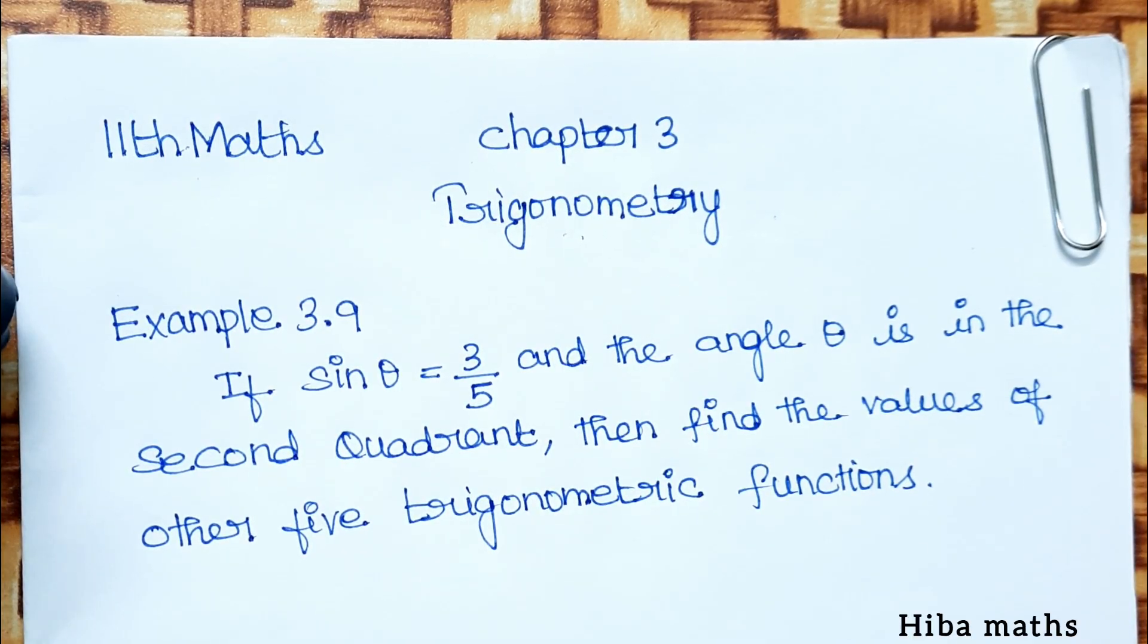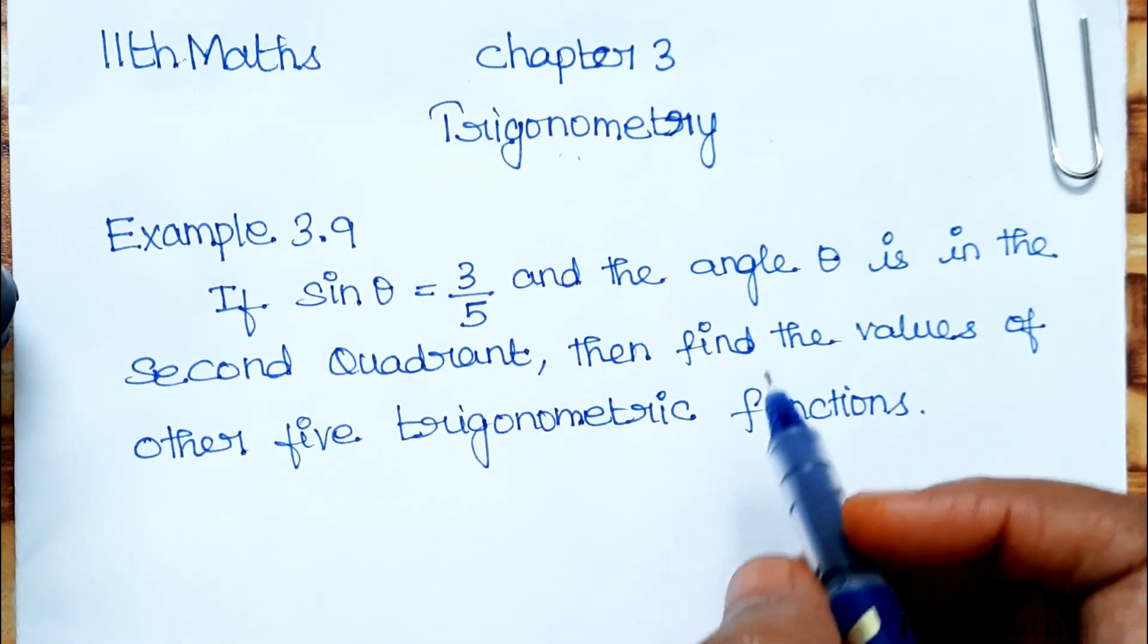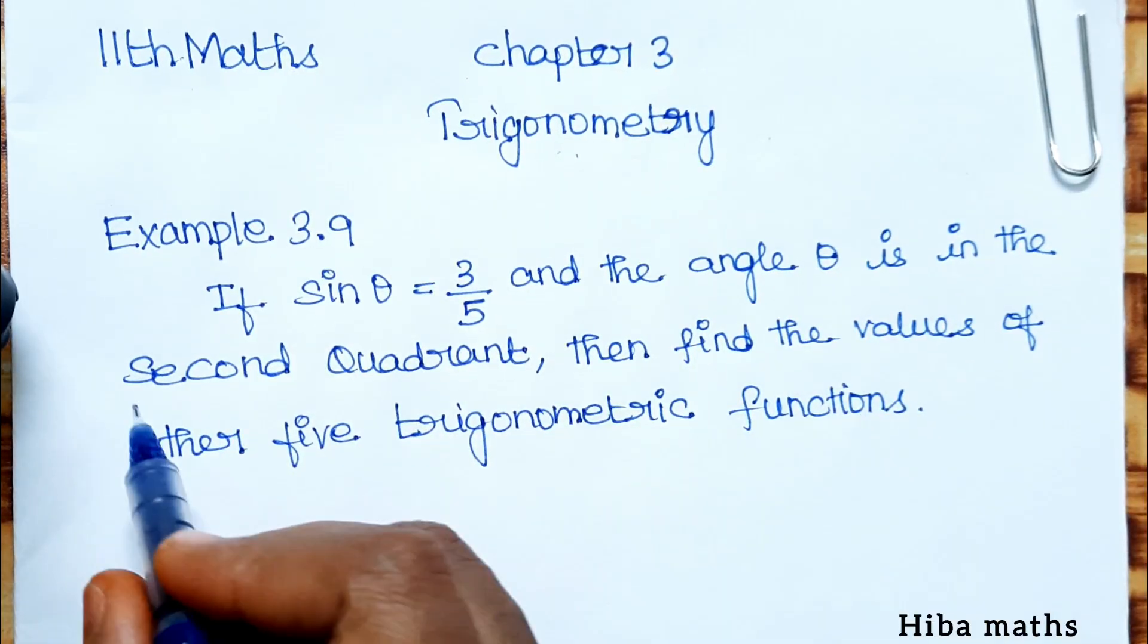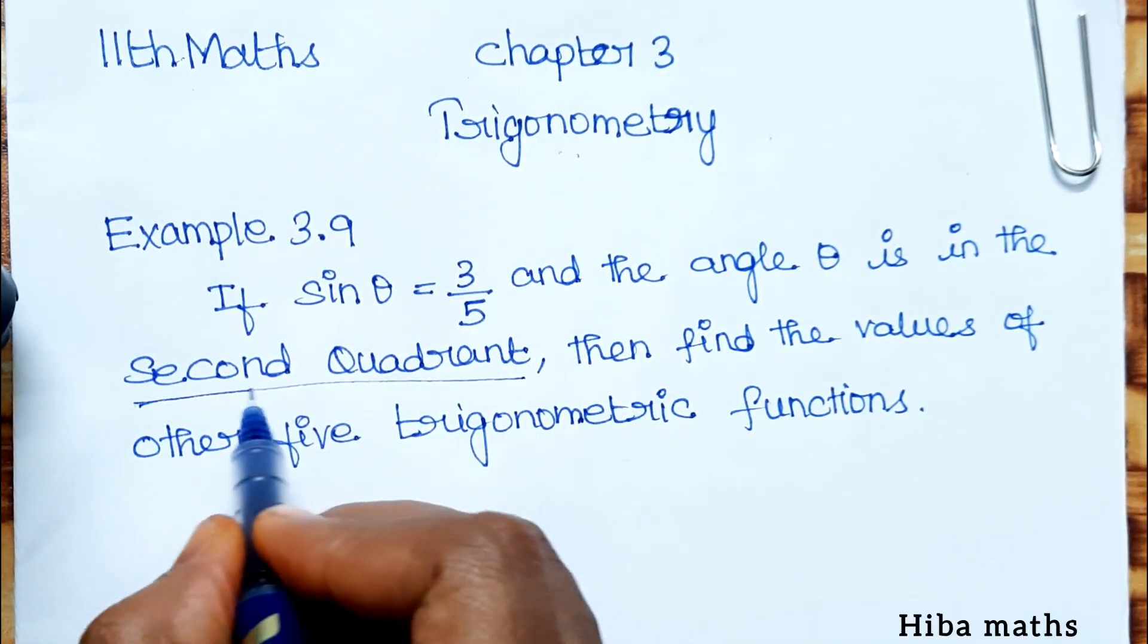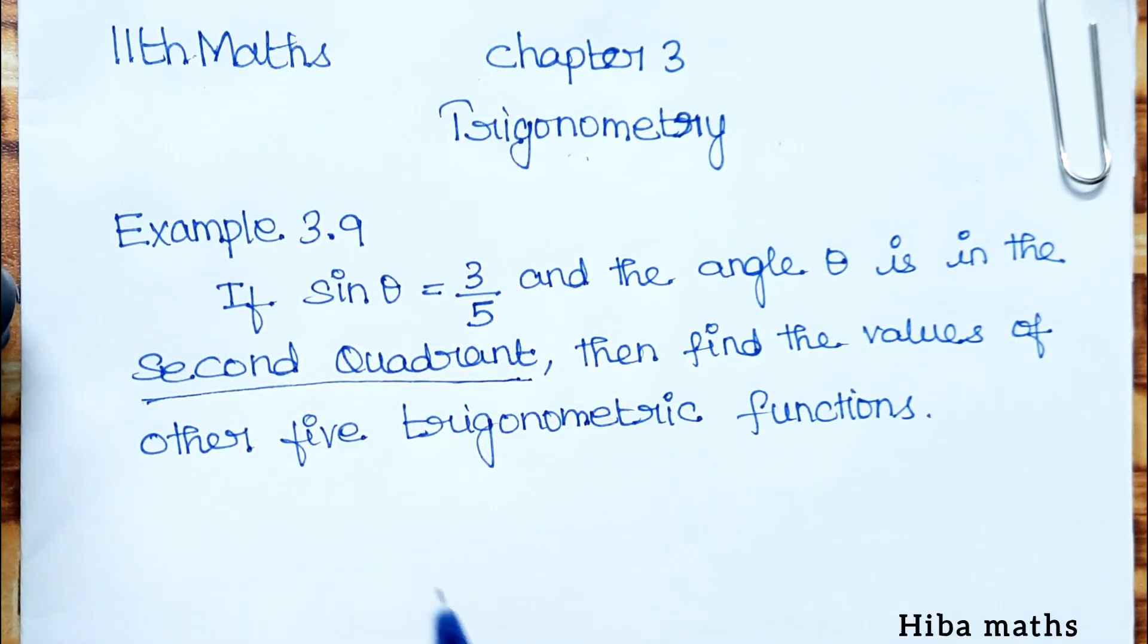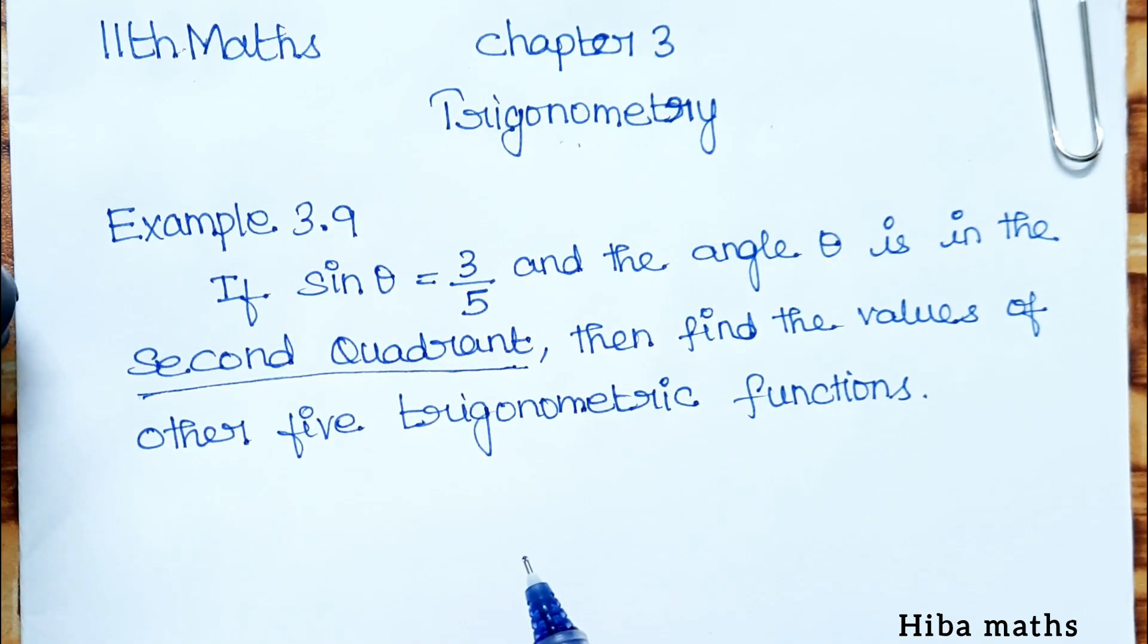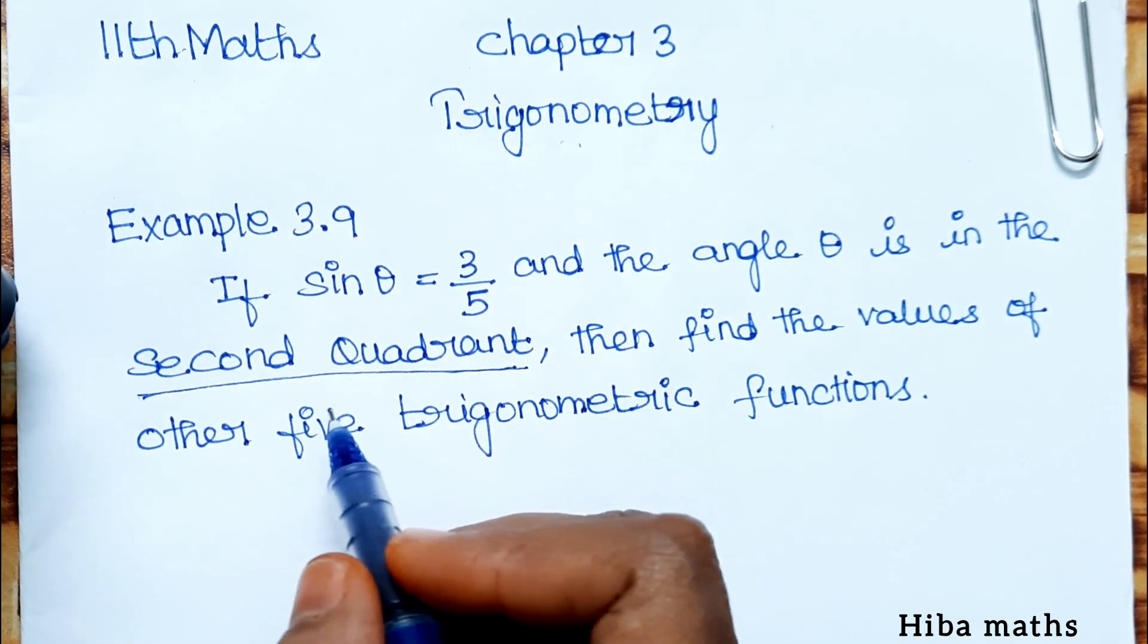In the problem, if sin θ equals 3 by 5 and the angle θ is in the second quadrant, find the values of other five trigonometric functions. In the second quadrant, sin is positive and others are negative, so I mentioned the quadrant.